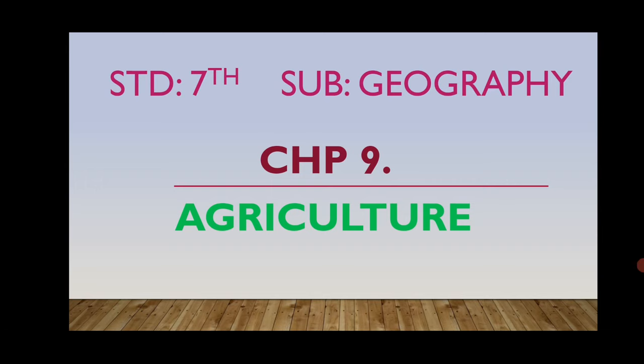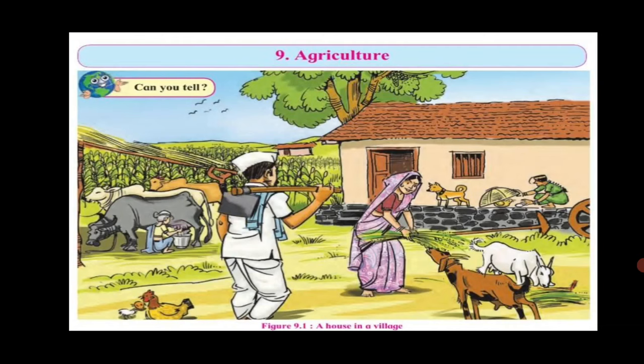Standard 7, Subject Geography, Chapter 9: Let's learn about Agriculture. In this picture, we see a standing crop, a ploughshare, etc. From this, it becomes obvious that this is a farmer's house.